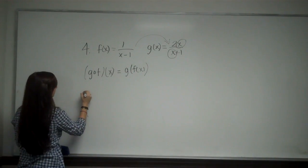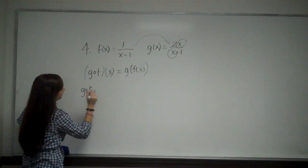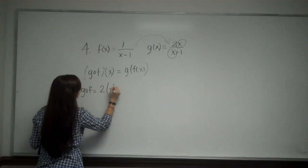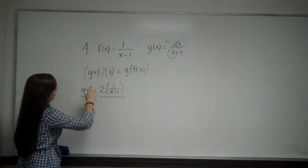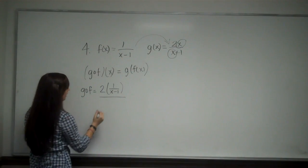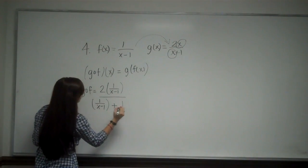So I now have g of f is going to equal 2 times 1 over x minus 1, over - and I plug it in again - I have 1 over x minus 1 plus 1.